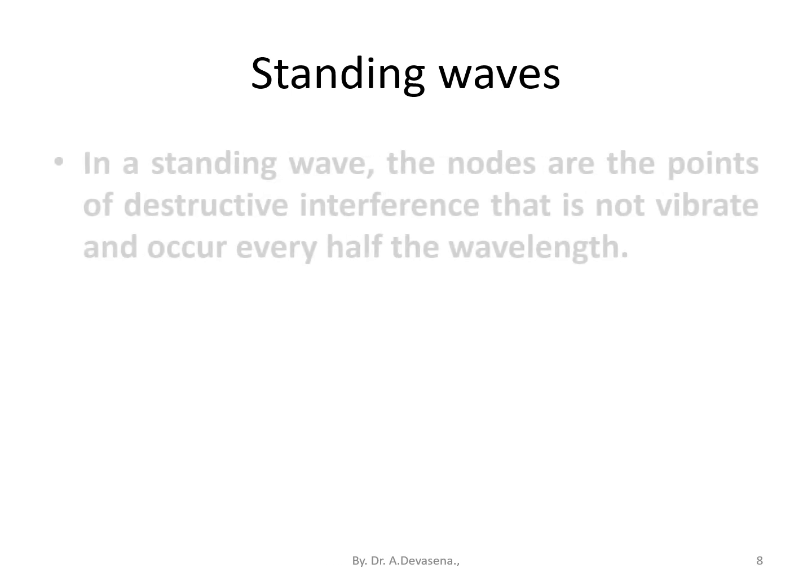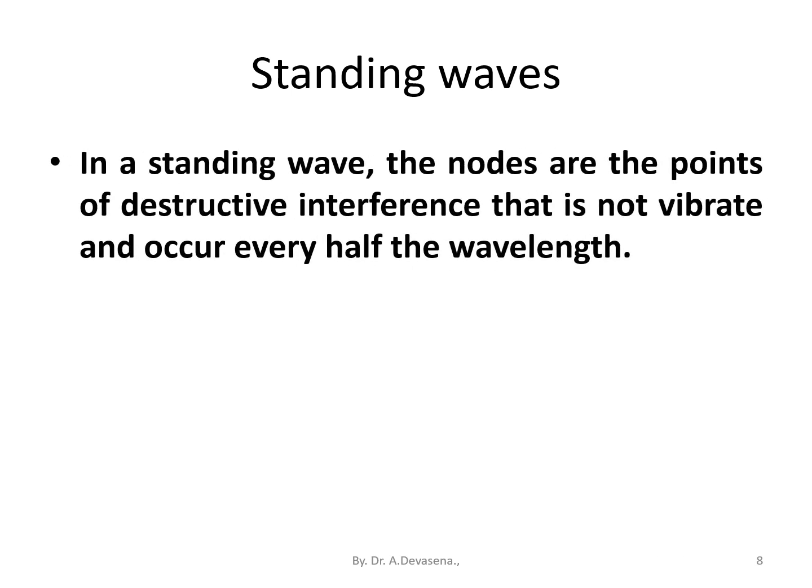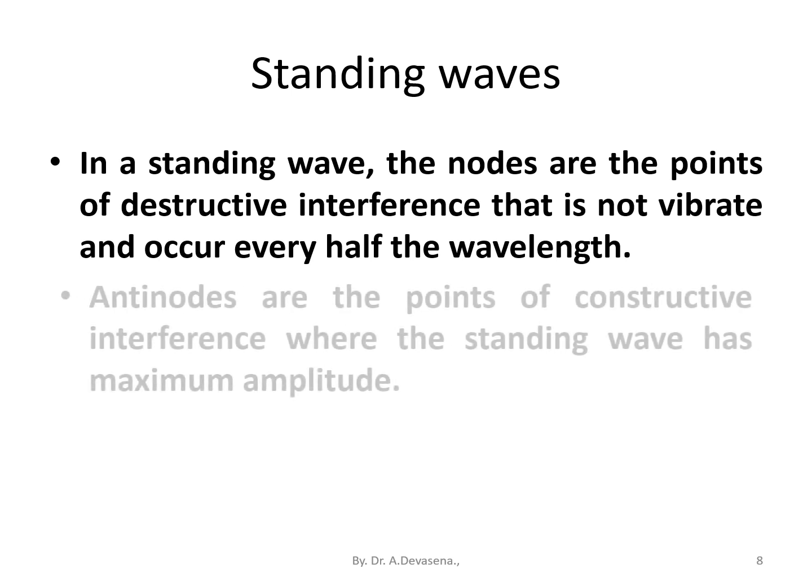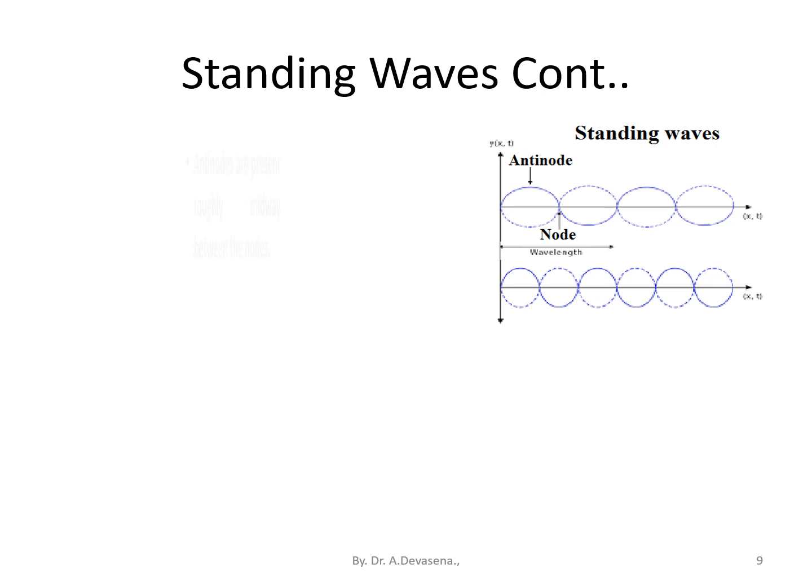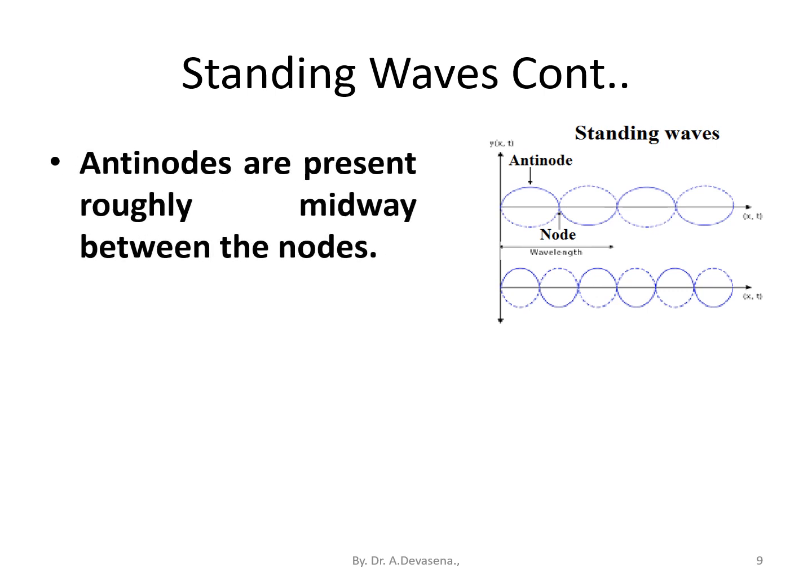In a standing wave, the nodes are the points of destructive interference that do not vibrate and occur every half wavelength. Antinodes are the points of constructive interference where the standing wave has maximum amplitude. Antinodes are present roughly midway between the nodes.